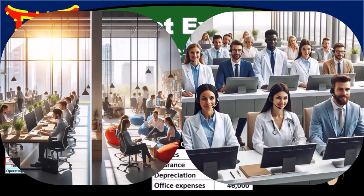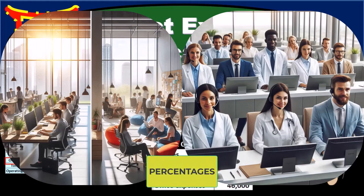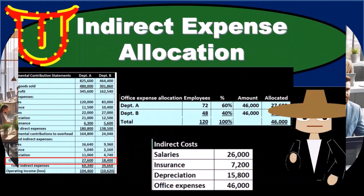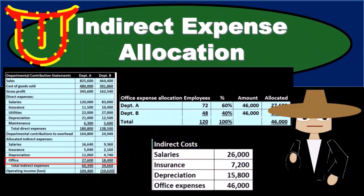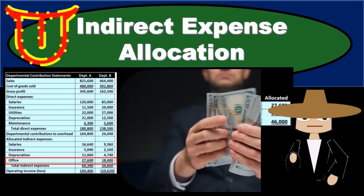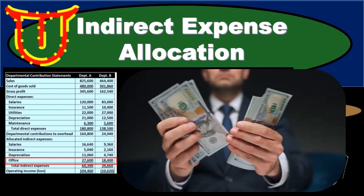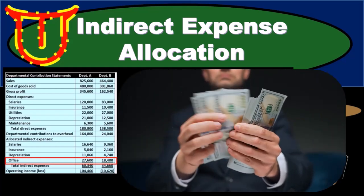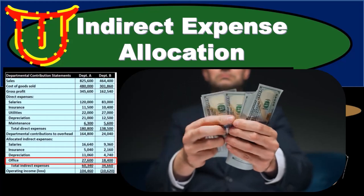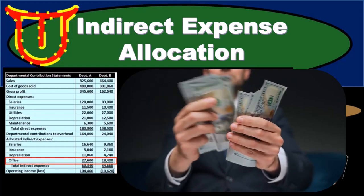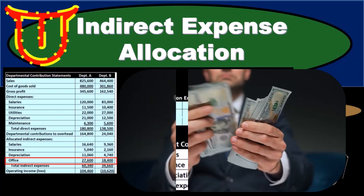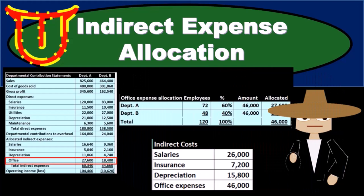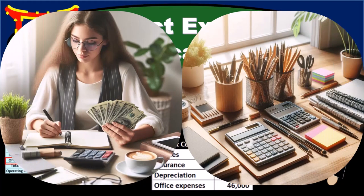To do that we will choose an activity base, and we will then use that activity base to come up with percentages. Those percentages are then used to allocate these expenses to the departments, because we can't allocate these expenses evenly due to the different amount of use of these related expenses per department. We will use different types of activity bases that we think are most applicable to allocating that particular type of expense.